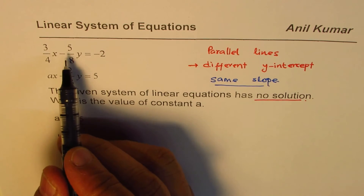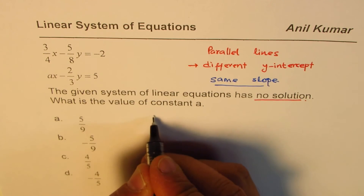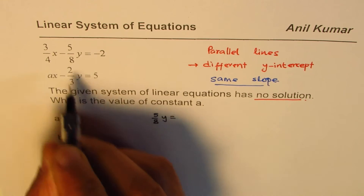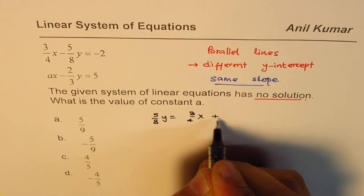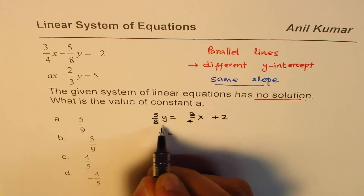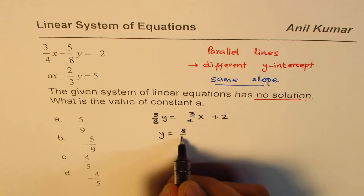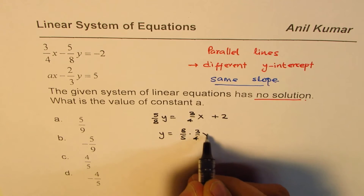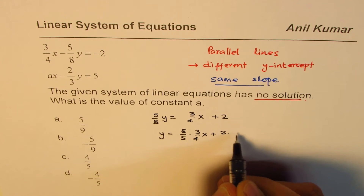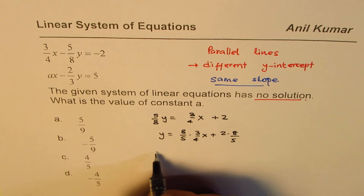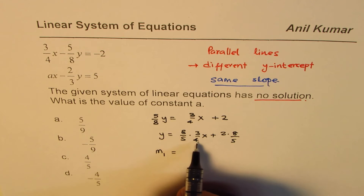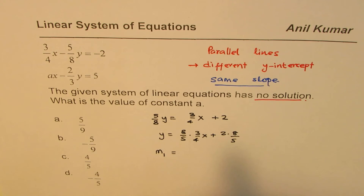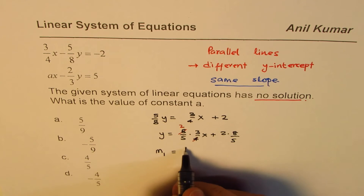Let's rearrange the first equation. We take 5 over 8y to the right side, so we get 5 over 8y equals 3 over 4x plus 2. Then y equals 8 over 5 times 3 over 4x plus 2 times 8 over 5. Simplifying, slope m1 is 6 over 5.